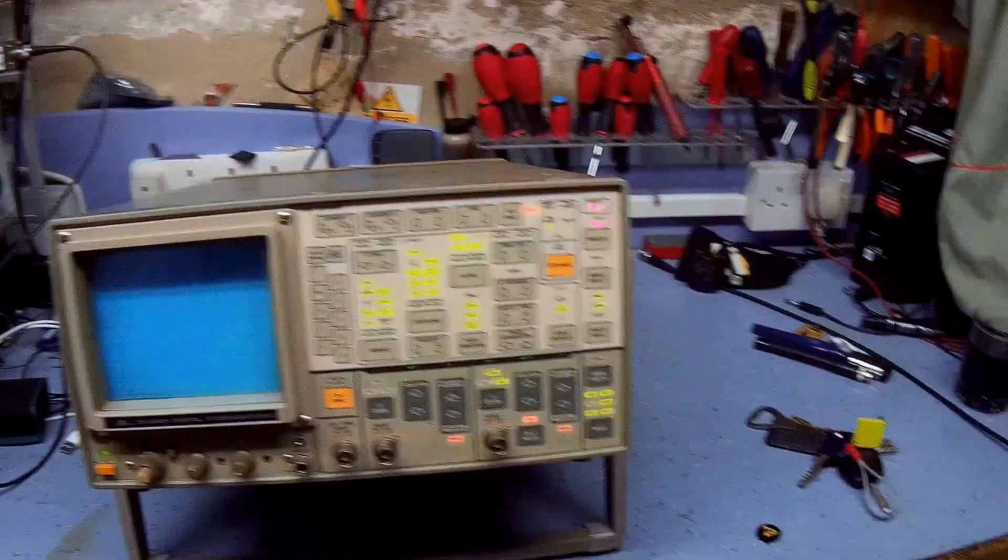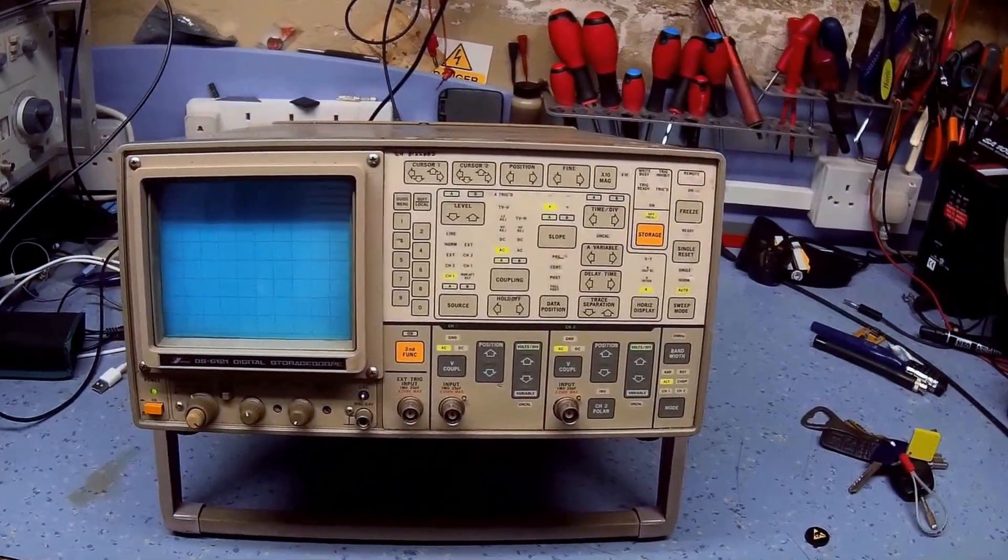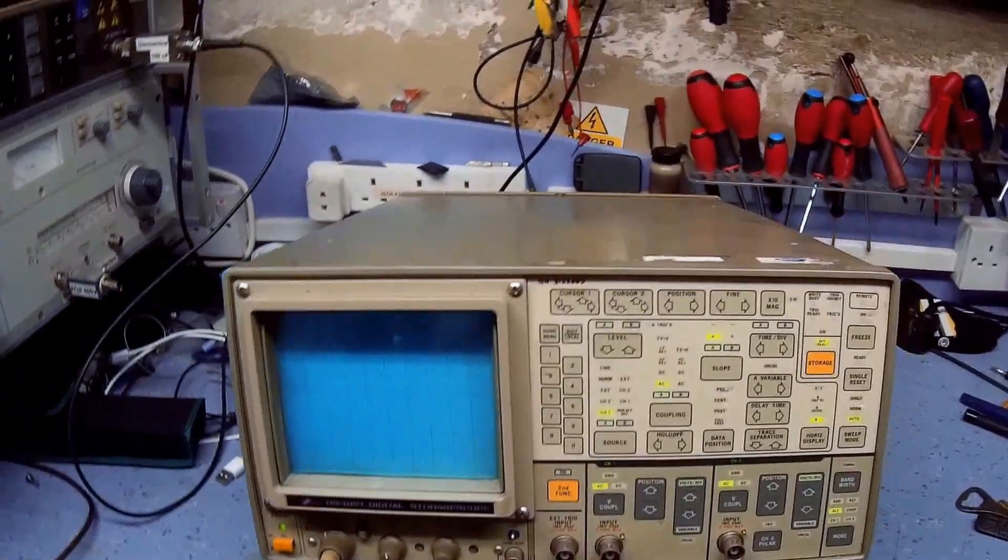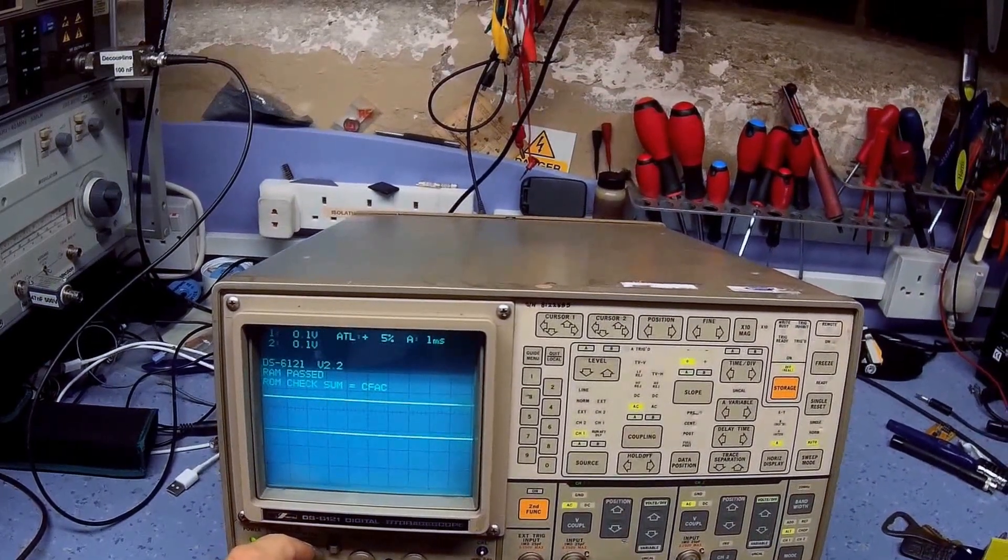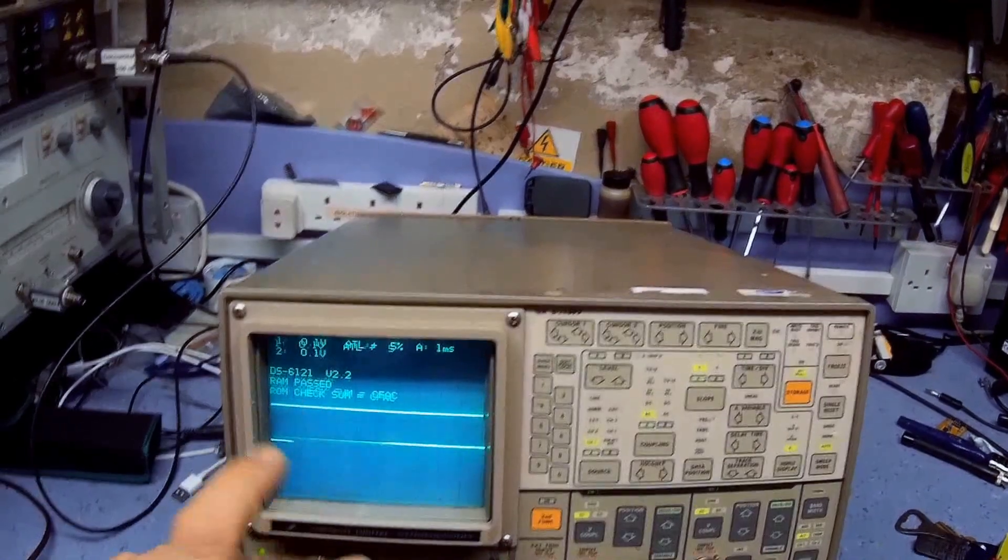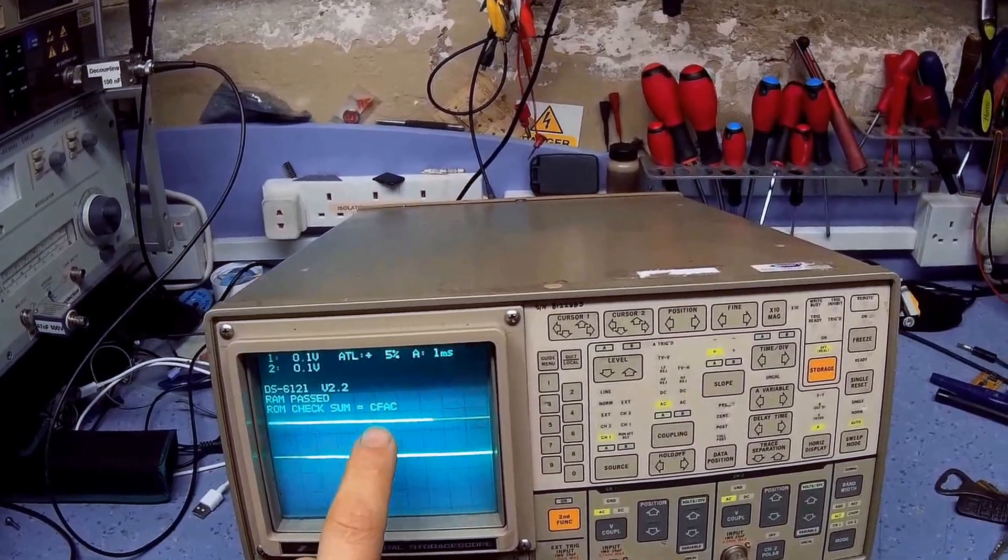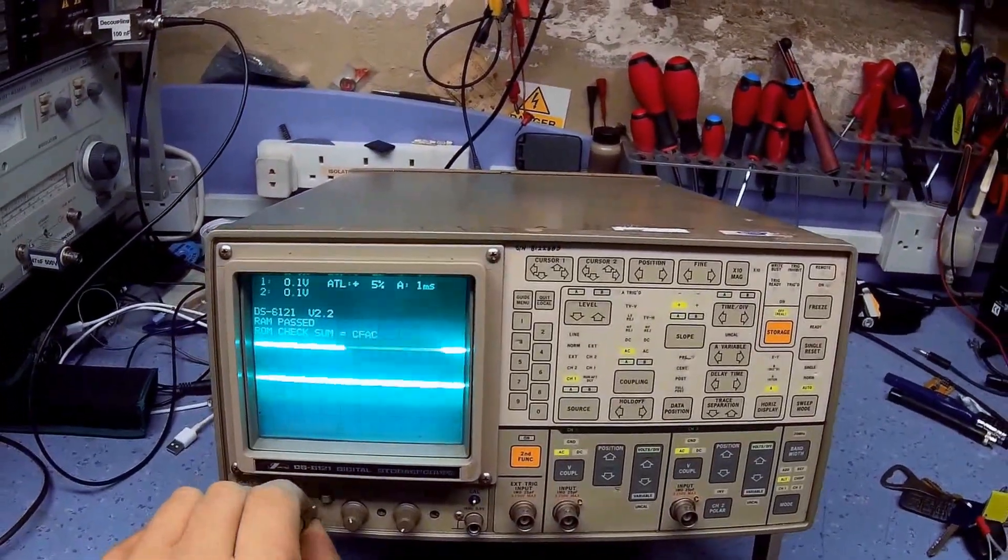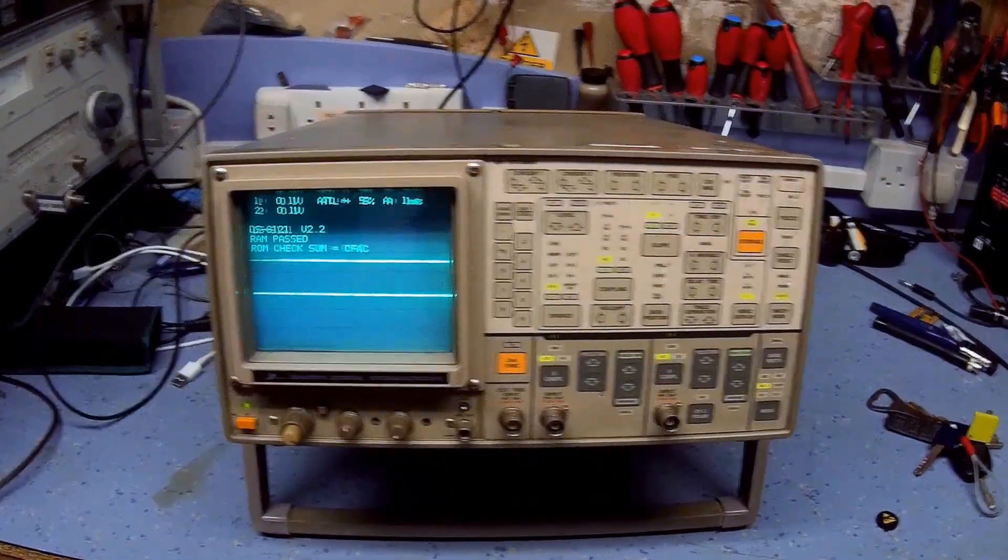So let's power it up. If this is the one that's been stored in the calibration department, it should be a nice, clean display. Now I think this checksum on the ROM checksum is, I think that's a fail, and I need to verify that, but as you can see, it's got a really bright CRT, and then you can see the display is nice and sharp.